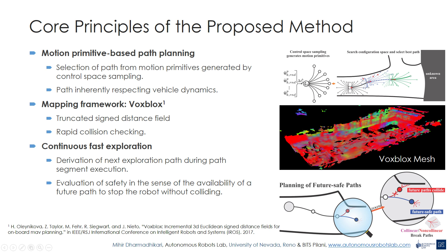This enables the rapid collision checking required for fast exploration. To enable continuous exploration, the next exploration path is calculated during the execution of the current path. To achieve maximum collision safety, and due to the fact that the planned paths do not end in zero-velocity states, the method continuously checks for the availability of a future path which will stop the robot without collision, in case the planner fails to calculate the next path in time.